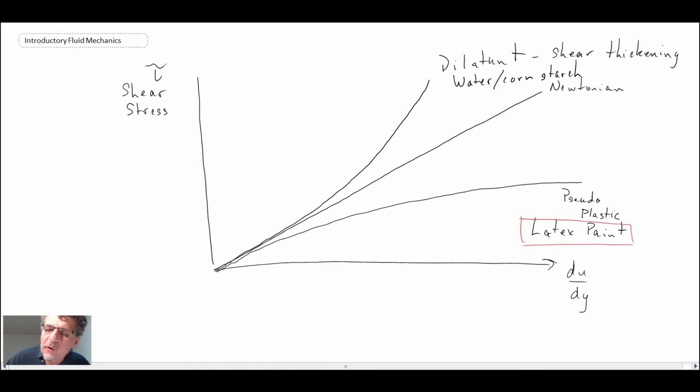So pseudoplastic down here, that is shear thinning. The higher the shear rate, the lower the shear stress. And then shear thickening, a water-cornstarch mixture. Newtonian, we have here.